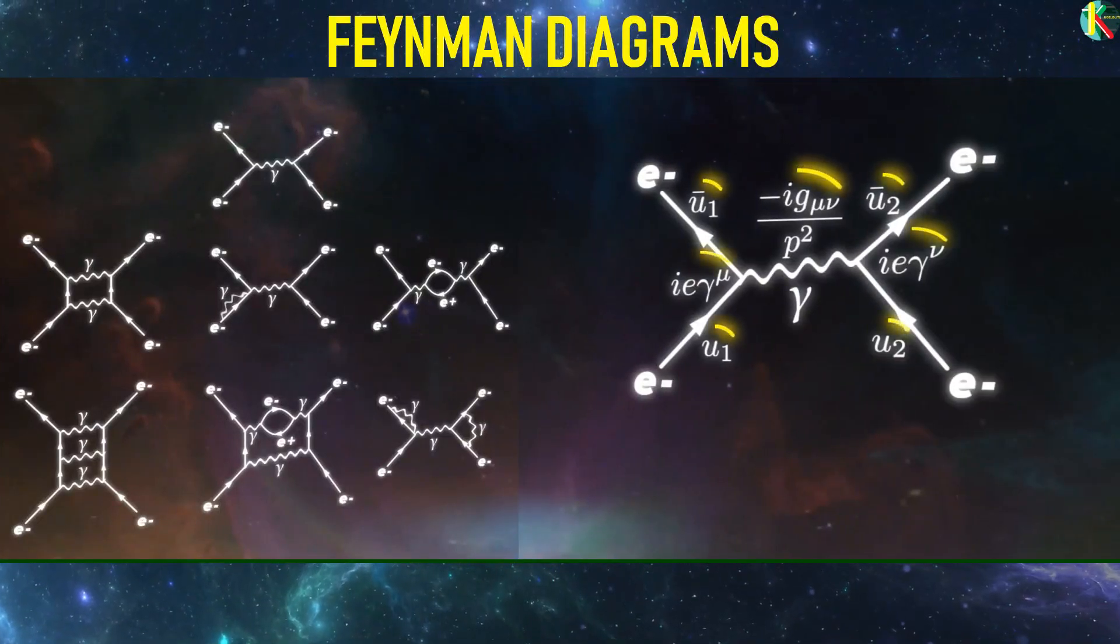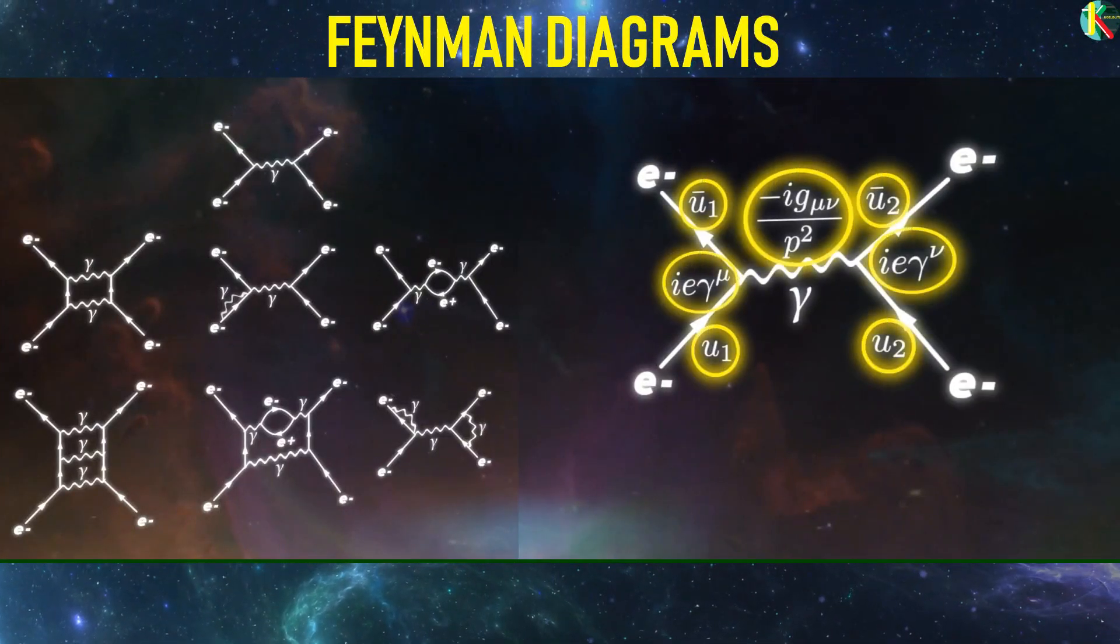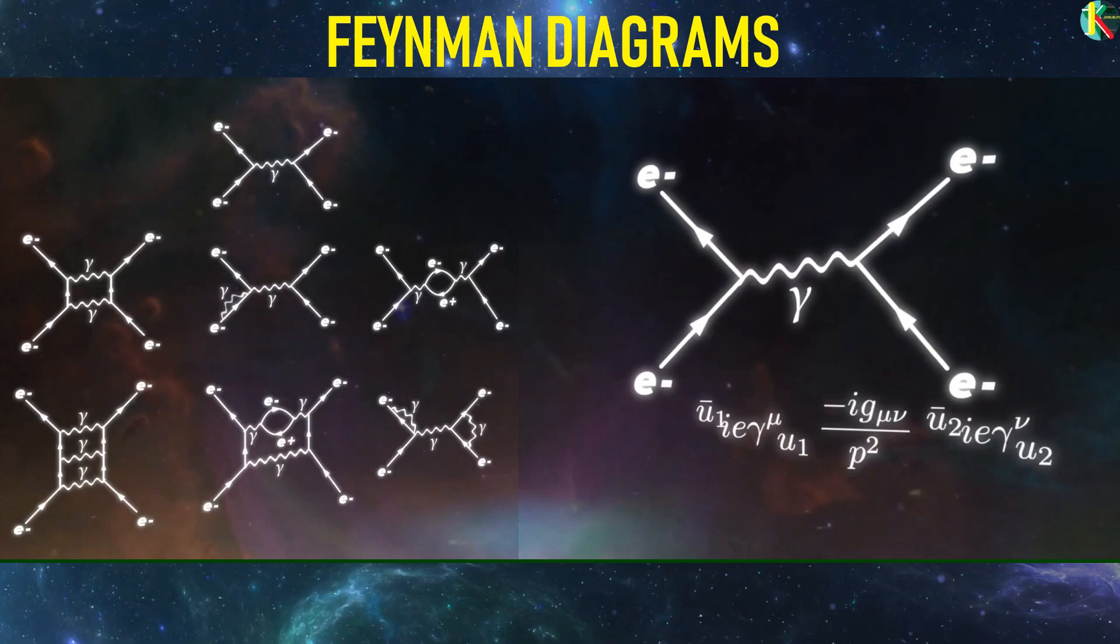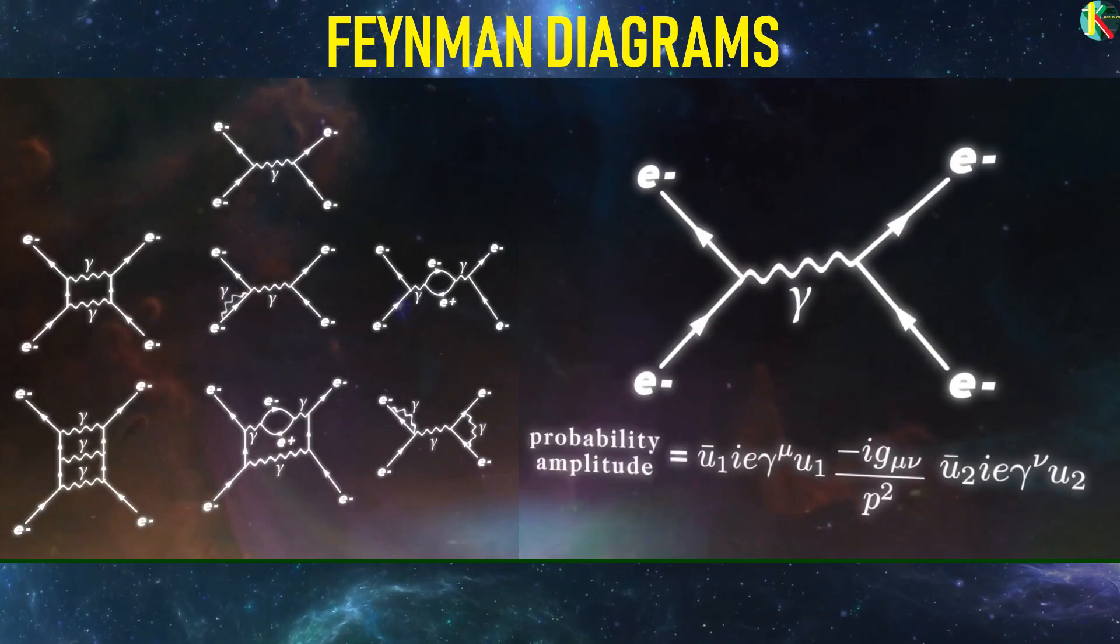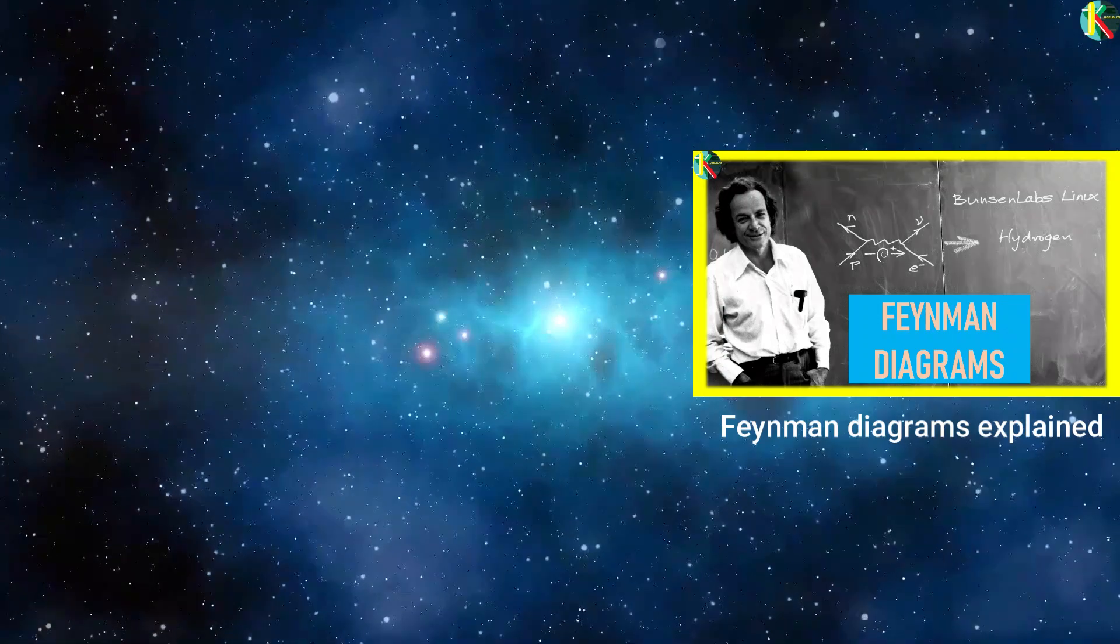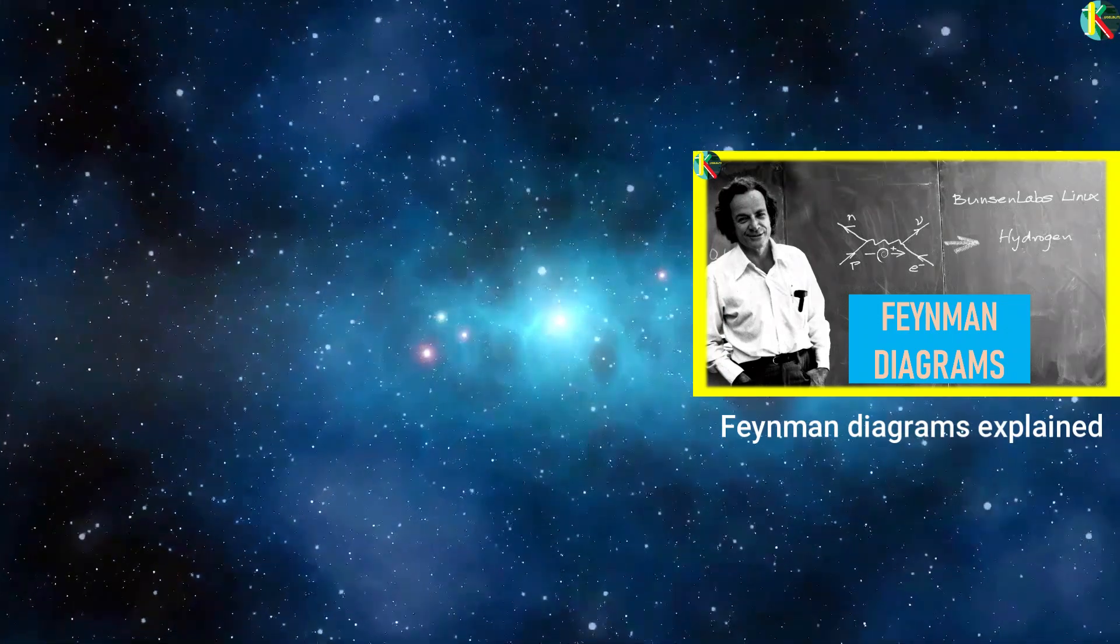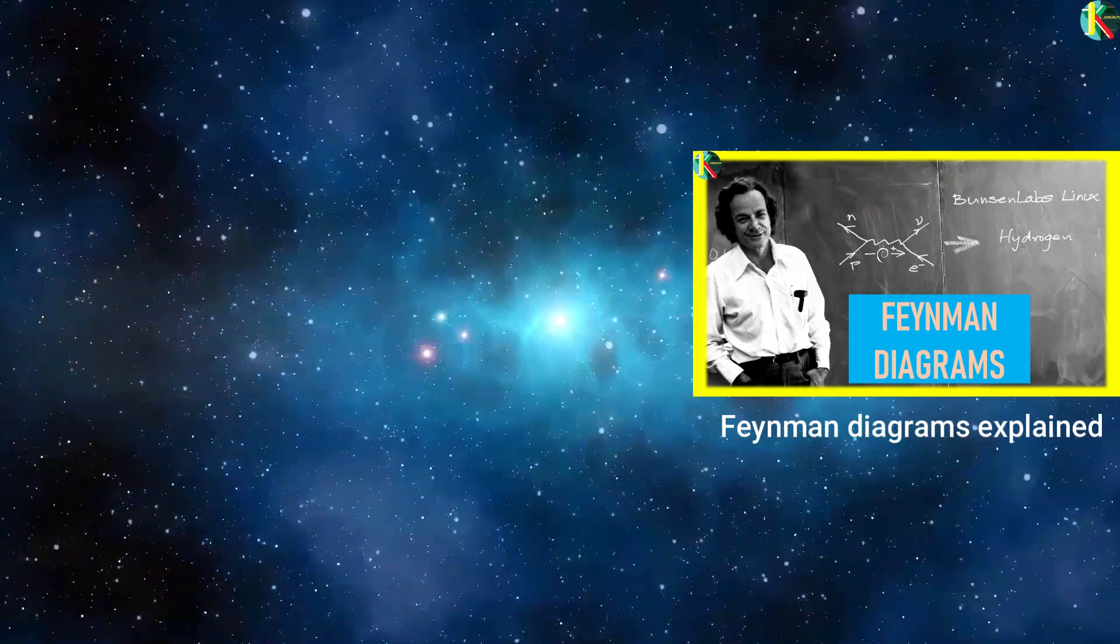We depict these interactions in Feynman diagrams. Each Feynman diagram represents one family of ways that the interaction could occur. And the sum of all possible Feynman diagrams gives the interaction strength. For a deeper understanding of Feynman diagrams, you can watch this video where I have discussed it in detail. The link is in the description.